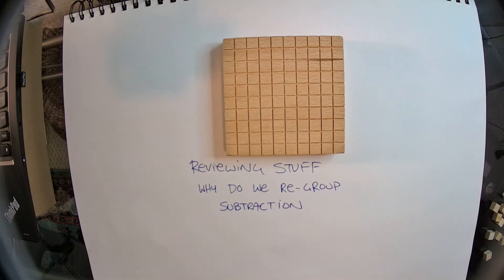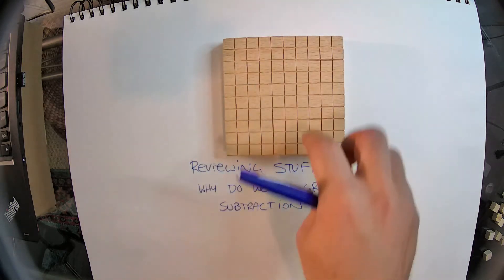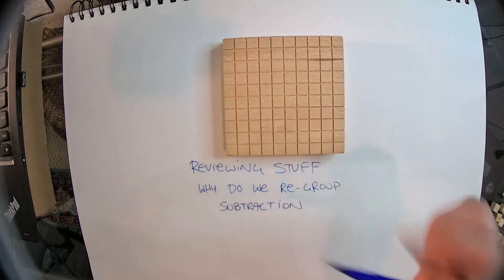Okay, so first things first. Why do we regroup for subtraction? Because we cannot just immediately start taking things out of this. This is 100. This is one solid brick of 100.